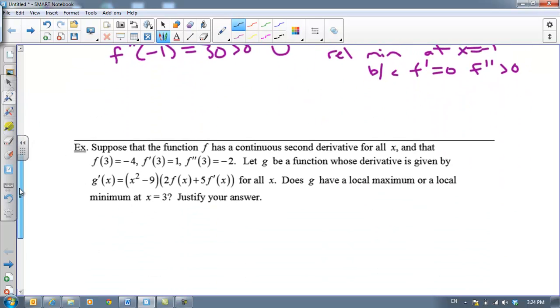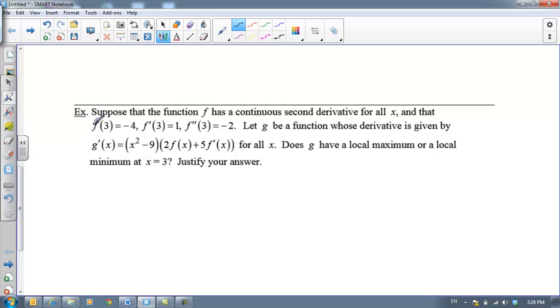Let's take a look at one more example. I've got some pieces of data, information about F, F prime and F double prime. And then I have G whose function is x squared minus nine times two F of x plus five F prime. Does G have a local maximum or a local minimum at x equals three? A local maximum, I would need G prime to equal zero and G double prime to be negative. A local minimum would mean G prime is zero and G double prime would be positive.